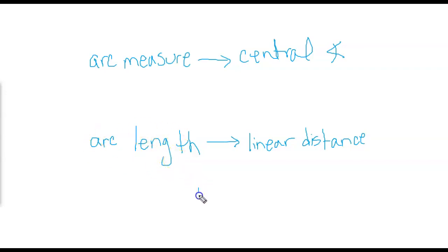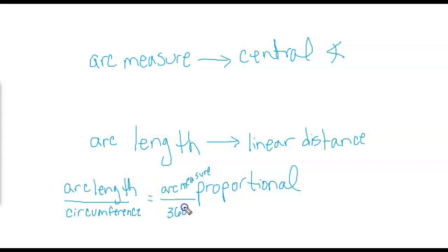We also notice that the arc length is proportional. We love to find things that are proportional because then we can just set up proportions and solve proportions quite easily by cross-multiplying. Specifically, it is proportional to the arc measure. So the arc length in comparison to the circumference is going to be that same proportion as the arc measure is to 360 degrees, is to the entire circle. So those are proportional to one another.